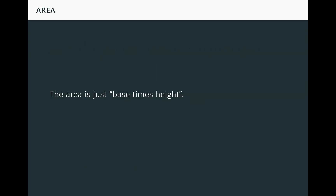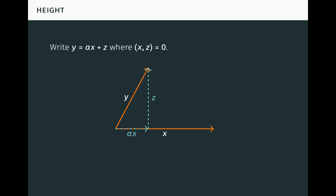We know that the area of a parallelogram is just base times height. Using the inner product or dot product in the plane, we can measure height. To do this, we first use orthogonal projection to write y in the form alpha x plus z, where x is orthogonal to z, as seen here. Notice that we write the inner product using parentheses. The vector alpha x is called the projection of y on x, while the vector z is sometimes called the rejection of y from x. Taking the inner product with x on both sides of the equation for y, we immediately obtain that alpha must be (x, y) over (x, x), where we assume here that x is non-zero.